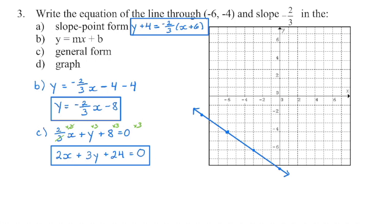Now distribute in the negative two-thirds and move all terms over. Negative two-thirds times x is negative two-thirds x. A negative times a positive gives a negative, and two times six is 12 over a denominator of three times one, which is three. Twelve divided by three gives four. Subtracting four from both sides brings that four over. Combine like terms to get negative eight. So my y-intercept is negative eight, and my slope matches the slope we were given.